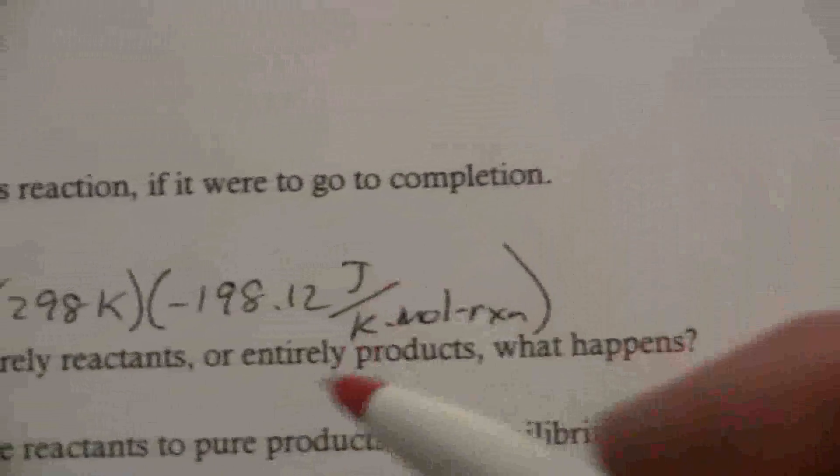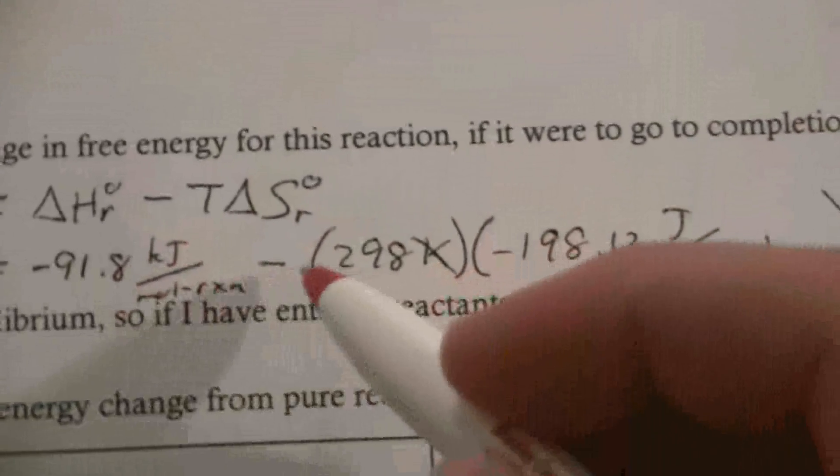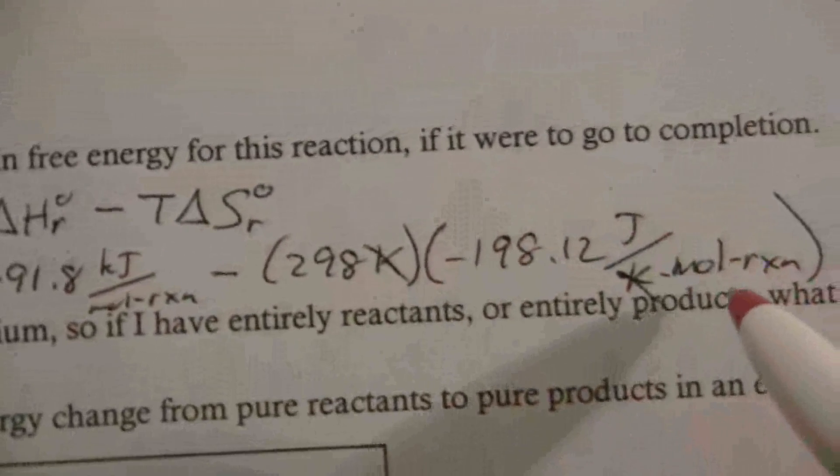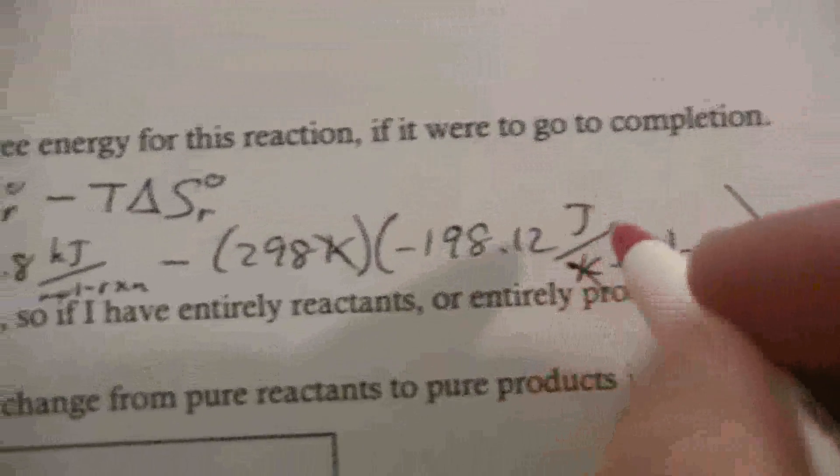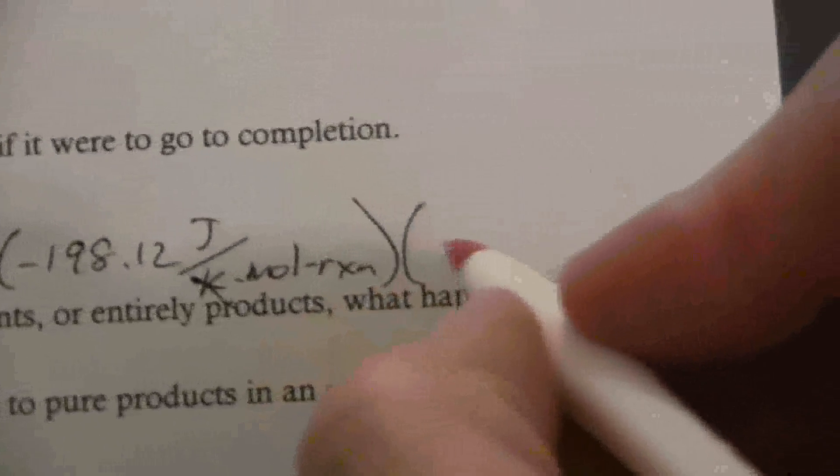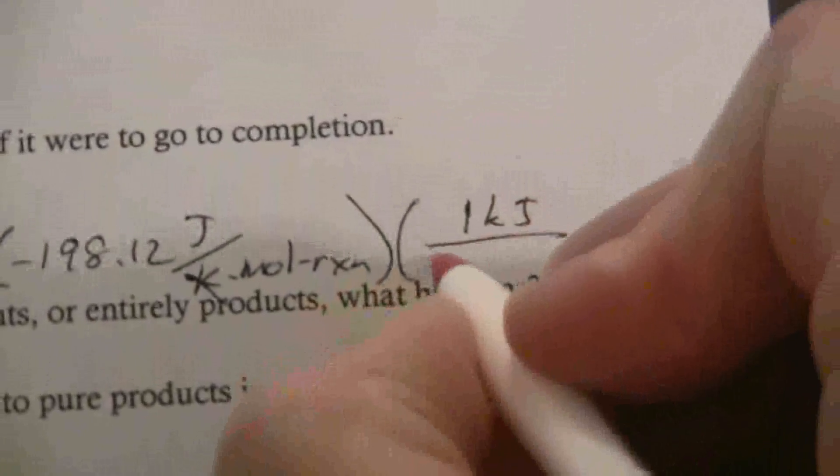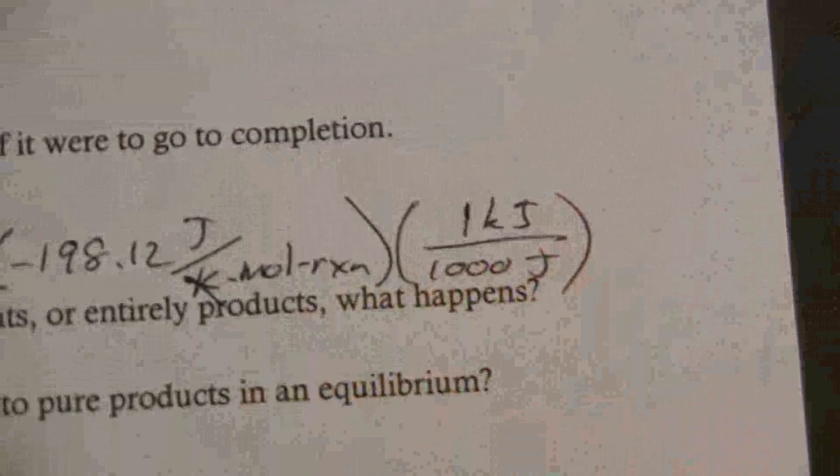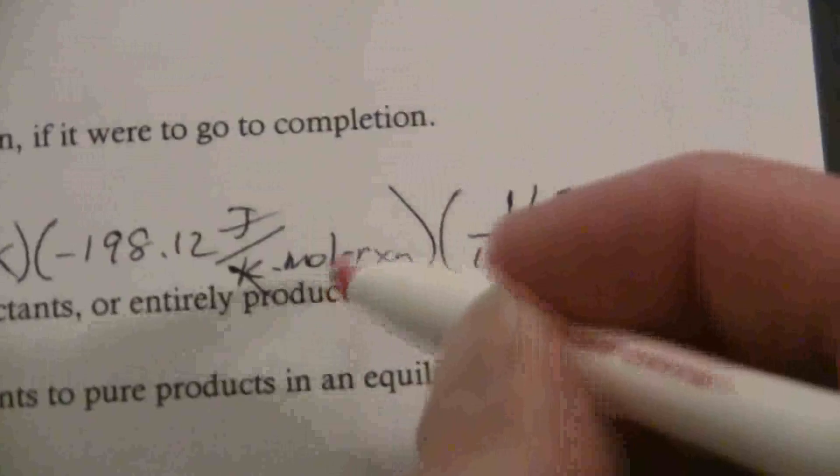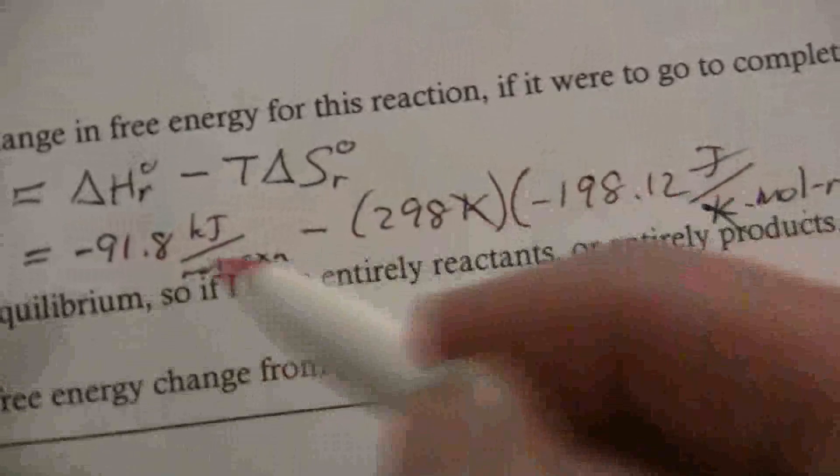So you'll notice here that my Kelvin will cancel and I'll have kilojoules minus joules per mole. So I need to fix that so that I can subtract those. Those have to be the same units. So I need to multiply this by a conversion factor where one kilojoule equals a thousand joules. So now I'll have kilojoules per mole of reaction. That's the same as I have here so I can now subtract those.